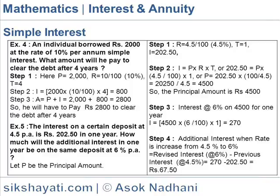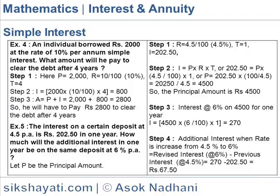The interest on a certain deposit at 4.5% per annum is Rs.202.50 in 1 year. How much will the additional interest in 1 year be on the same deposit at 6% per annum? Let P be the principal amount. Step 1: R = 4.5%, T = 1. I = 202.50 = P × (4.5/100) × 1, so P = 202.50 × (100/4.5) = 4500. The principal amount is Rs.4500.